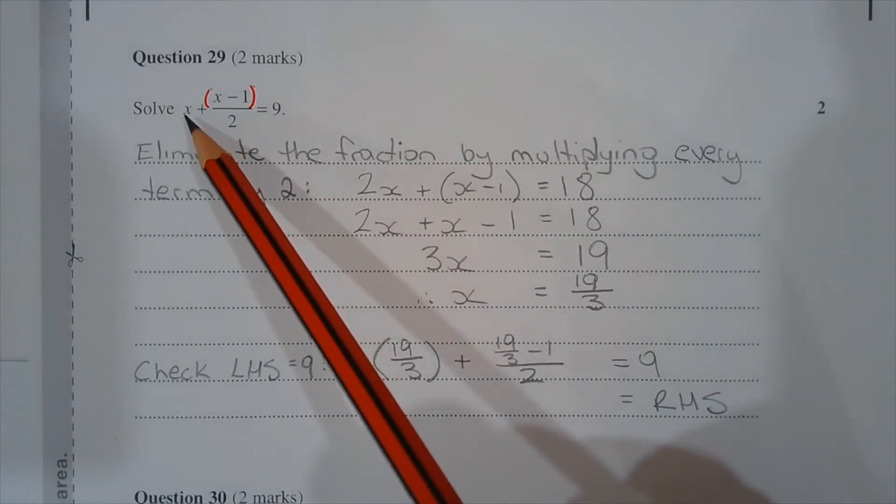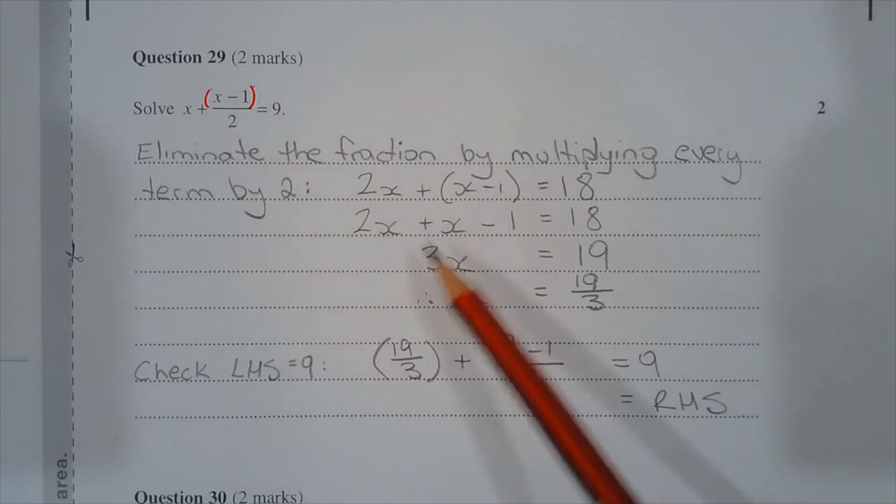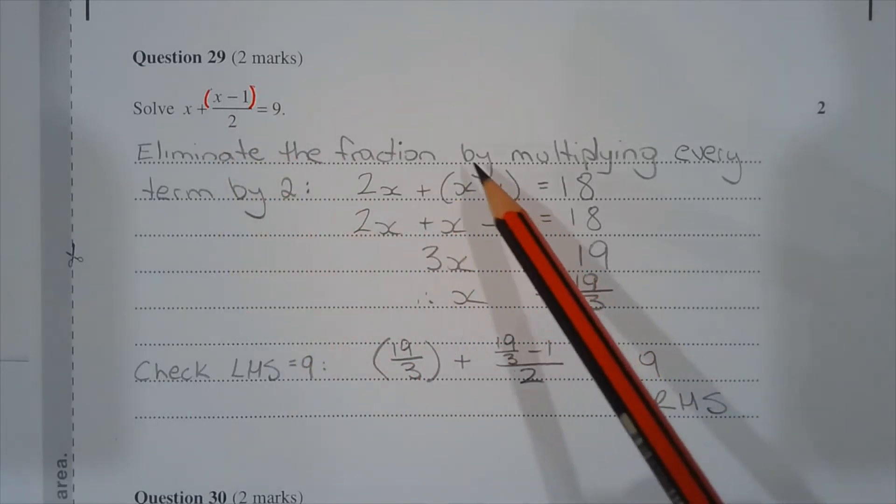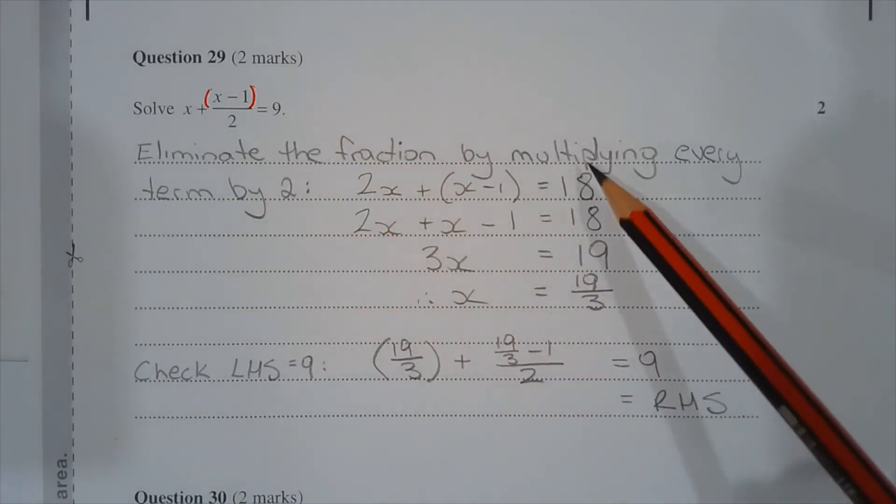Now x multiplied by 2 is 2x. x minus 1 all over 2 multiplied by 2 is x minus 1, and they're enclosed in brackets. 9 multiplied by 2 is 18.